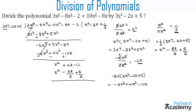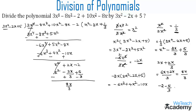Now let us subtract. The additive inverse of x² is minus x², of minus 2x/3 is plus 2x/3, and of plus 5/3 is minus 5/3. The x² terms cancel. For the x terms: 2x plus 2x/3 — taking 3 as the LCM gives 6x plus 2x over 3, which is 8x/3. For the constant: minus 2 minus 5/3 — taking 3 as LCM gives minus 6 minus 5 over 3, which is minus 11/3.